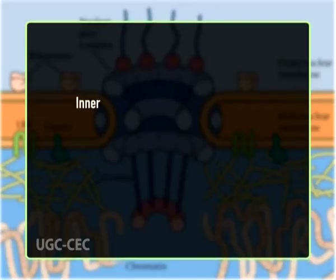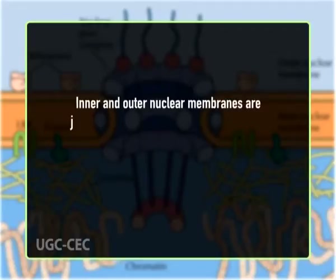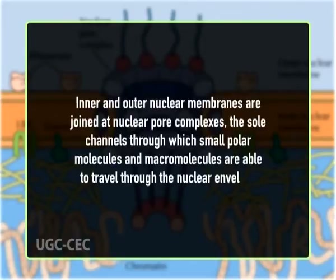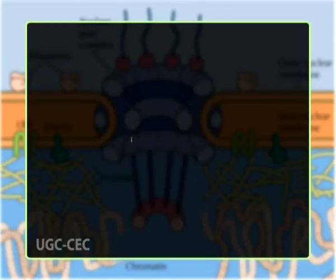The critical function of the nuclear membranes is to act as a barrier that separates the contents of the nucleus from the cytoplasm. The inner and outer nuclear membranes are joined at nuclear pore complexes, the sole channels through which small polar molecules and macromolecules are able to travel through the nuclear envelope. Underlying the inner nuclear membrane is the nuclear lamina, a fibrous meshwork that provides structural support to the nucleus.